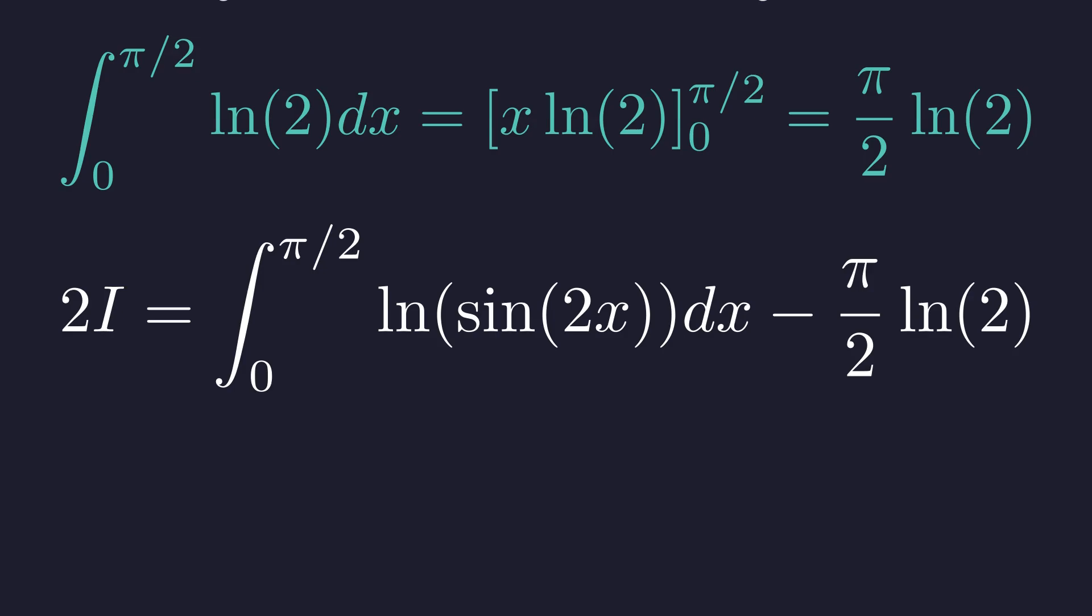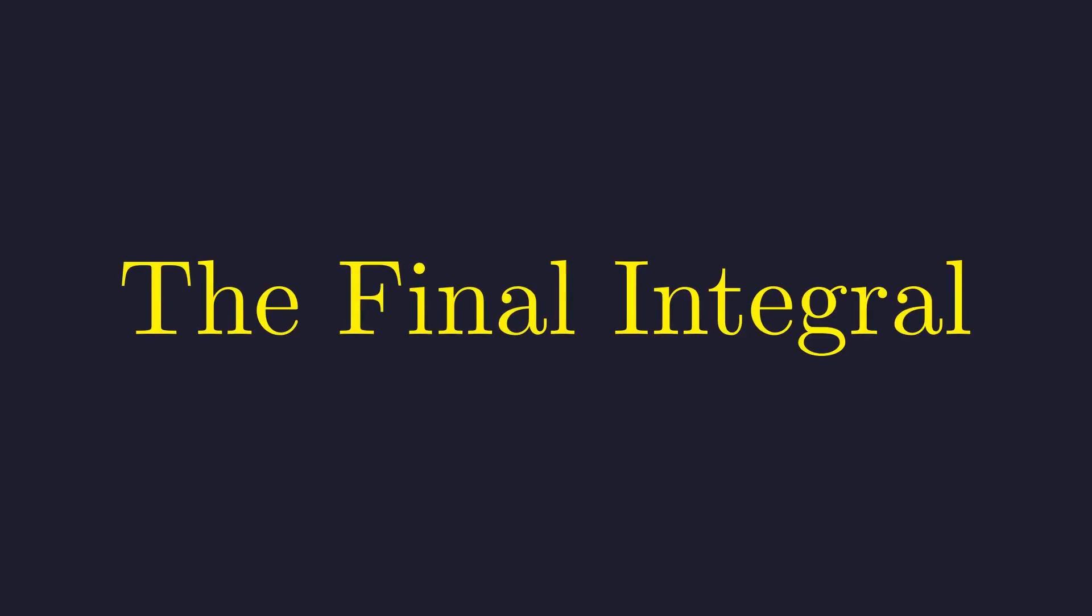We're getting closer, but we still need to solve the remaining integral. Let's focus on this last piece of the puzzle using a substitution. We'll use a u-substitution, letting u equal 2x. This means dx is equal to du over 2.